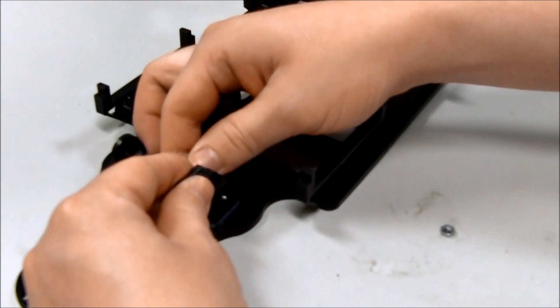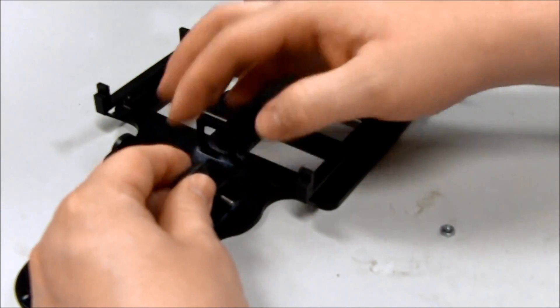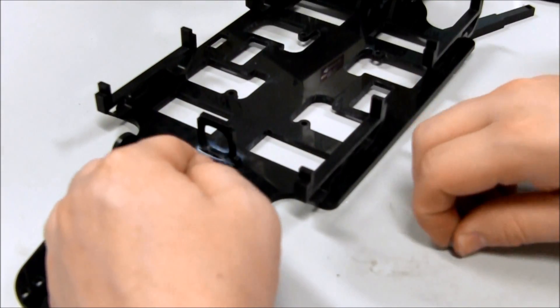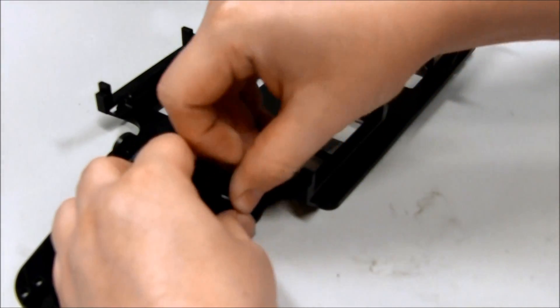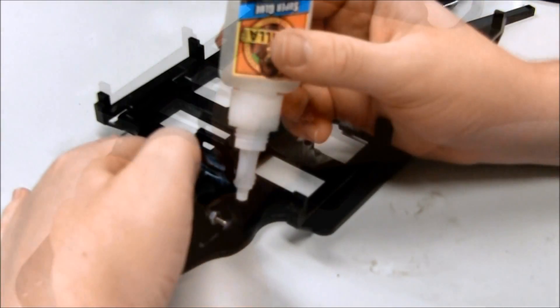Take the 440 screw and insert it into the aligned holes. Take the 440 nut and thread it onto the screw so that the joint is secure but movement is still allowed.